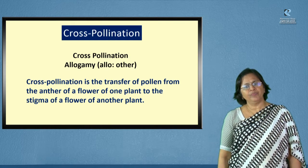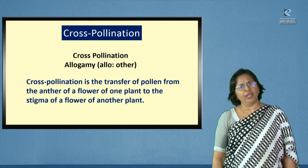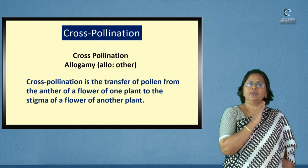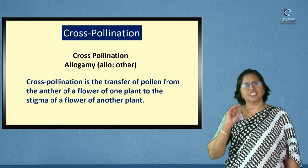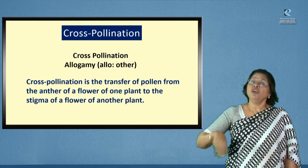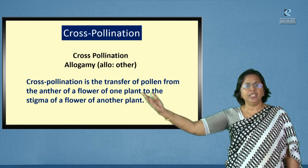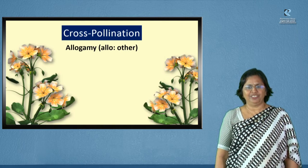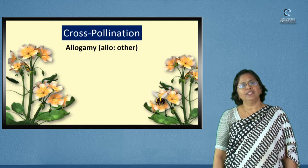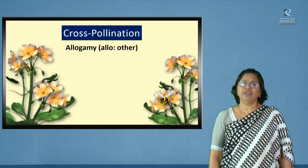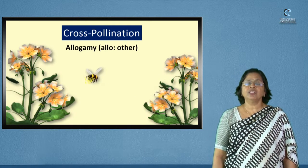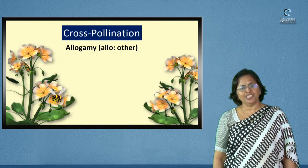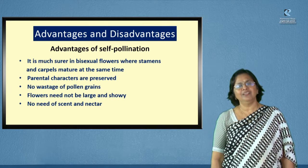Cross-pollination is also called allogamy. 'Allos' refers to others. When pollen grain of a flower falls on the stigma of another flower situated on a totally different plant, it is called cross-pollination. It is often carried out by way of an agency. For self-pollination, an agent may or may not be needed, but for cross-pollination, an agent is a must.